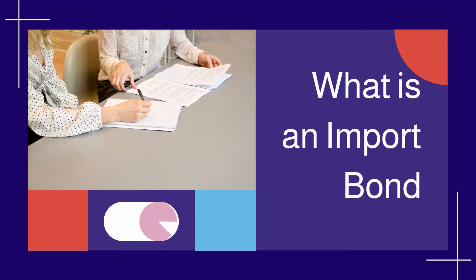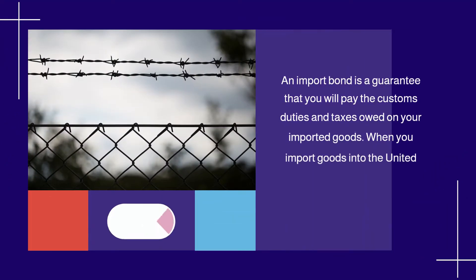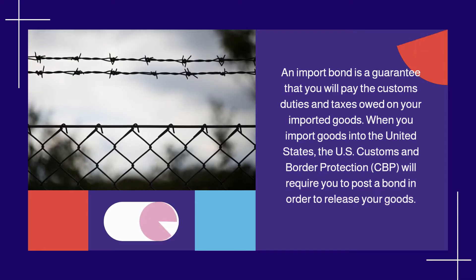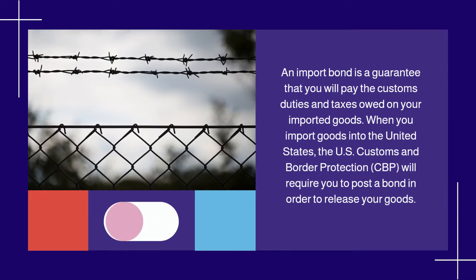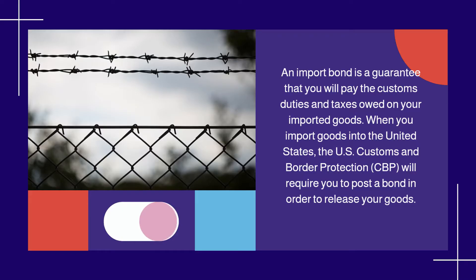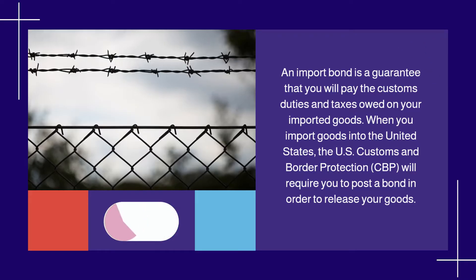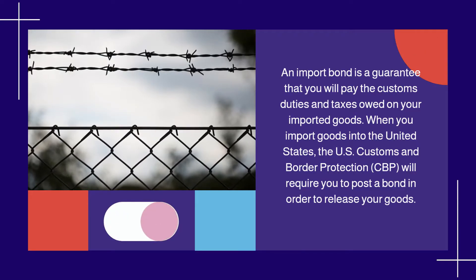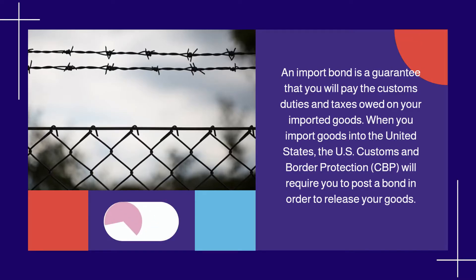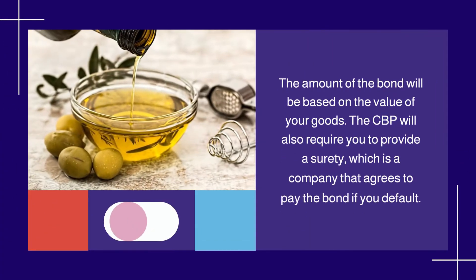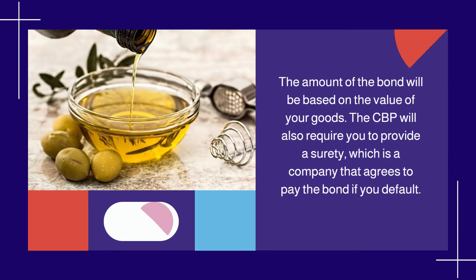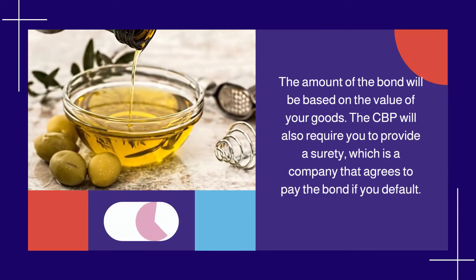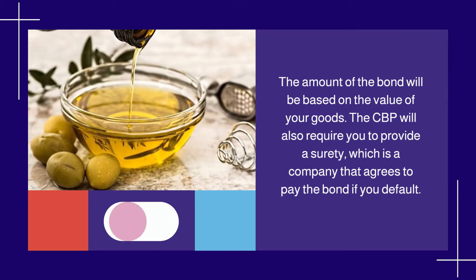What is an Import Bond? An Import Bond is a guarantee that you will pay the customs duties and taxes owed on your imported goods. When you import goods into the United States, the US Customs and Border Protection will require you to post a bond in order to release your goods. The amount of the bond will be based on the value of your goods. The CBP will also require you to provide a surety, which is a company that agrees to pay the bond if you default.